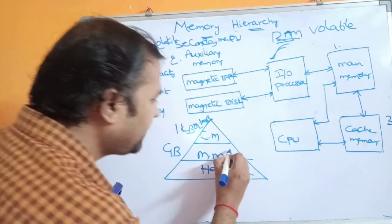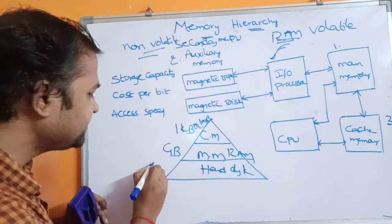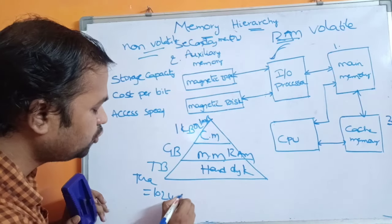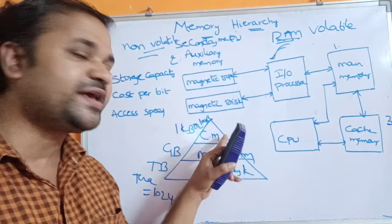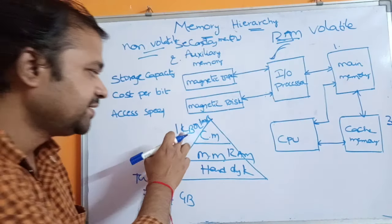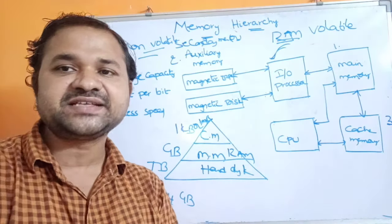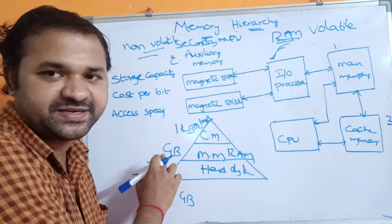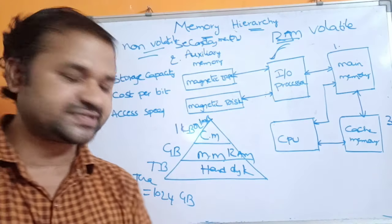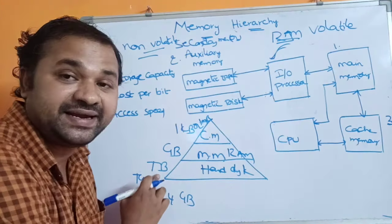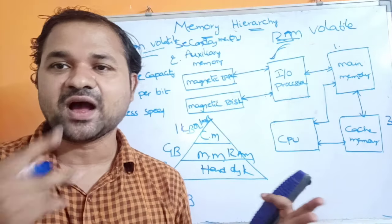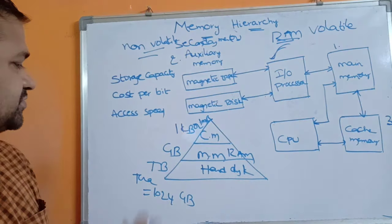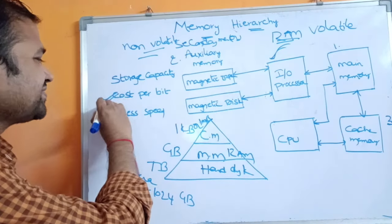Secondary memory, which is the hard disk, has capacity in terabytes. 1 terabyte equals 1024 gigabytes. So hard disk storage capacity can be 1 TB, 500 GB, 300 GB, and so on. Main memory — which is RAM — is in GBs: 2 GB, 4 GB, 8 GB, 16 GB, 32 GB. This covers the storage capacity of each memory type.